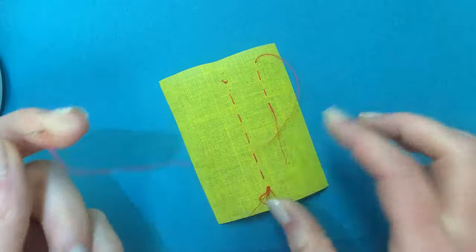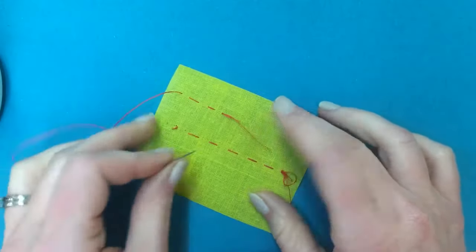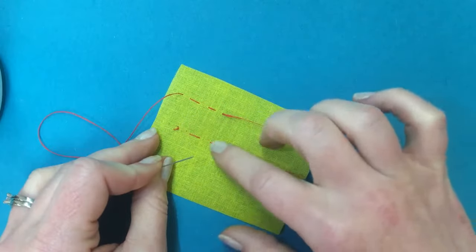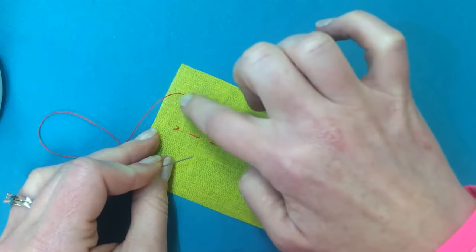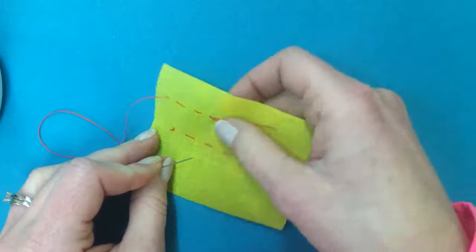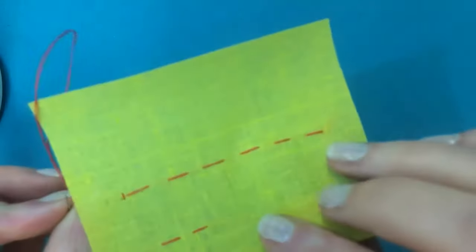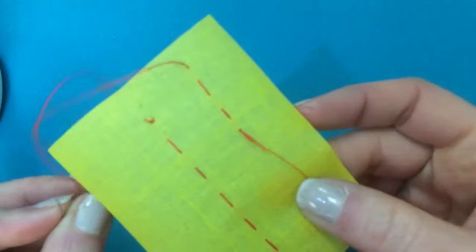This is a running stitch and this is the bad side, so this is where my knots are. This one is a complete seam and then this one we have just finished with the thread coming out right here. This is the good side, so we want all of our knots to be on the bad side.